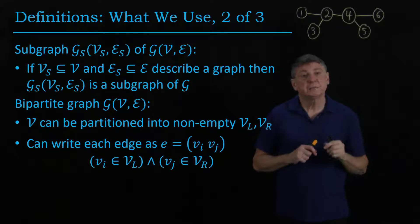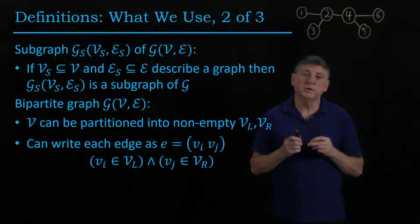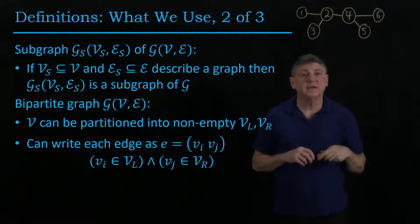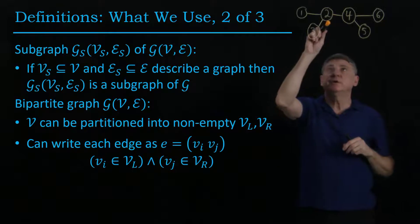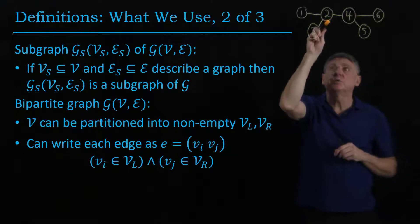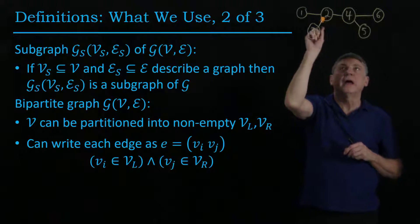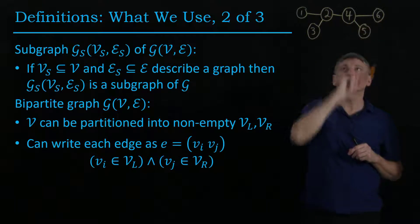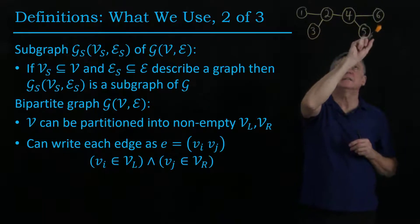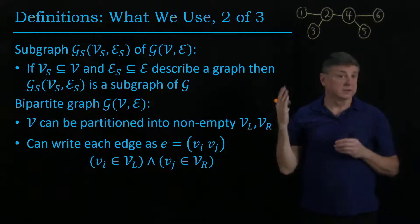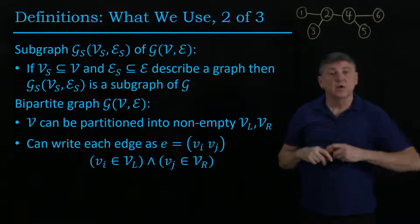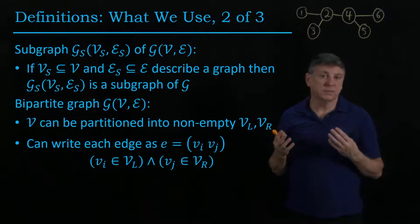This graph, for example, is bipartite. What we could do is we could imagine picking it up and sort of dangling it, and what it does is it forms a tree. So, for example, we could pick node 2 as the node of a tree. Node 2 connects to 1, 3, and 4, and then from 4, we connect to 5 and 6. And so what we can do is we can say, well, 2 and 5 and 6 are in the, let's say, the left set, and 1, 3, and 4 are in the right set. So that's one example that we will commonly see.